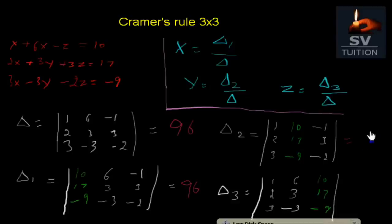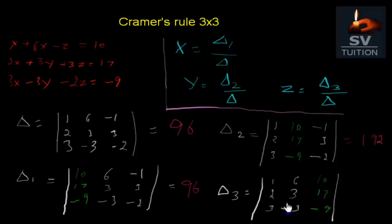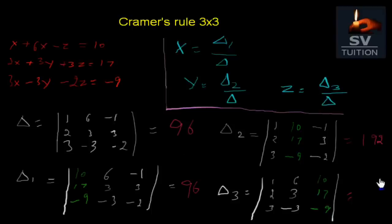Now we will calculate the determinant of delta 3. We just change the third column, and it will be 10, 17, minus 9. The first and second columns will be the same as delta. And its value will be 288.